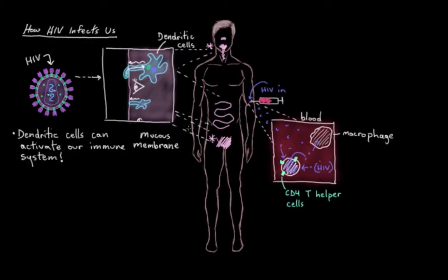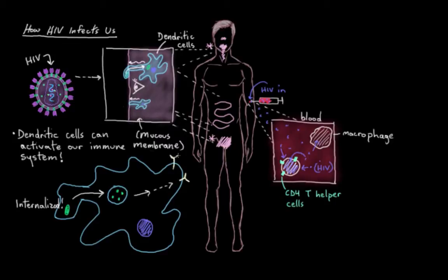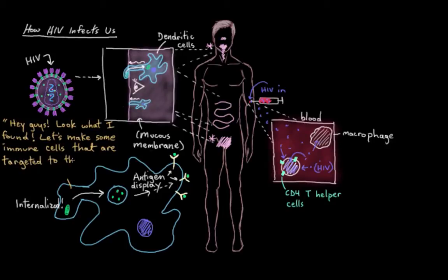In a normal scenario, if they find something they're worried about — maybe a virus or a bacteria — they internalize it, then cut it up into a few pieces, and display little pieces of it, which are called antigens, on their surface. Essentially they want to get other immune cells' attention, saying: 'Hey guys, look what I found. Let's make some immune cells that are targeted to these little pieces here. Let's wipe this thing out.'